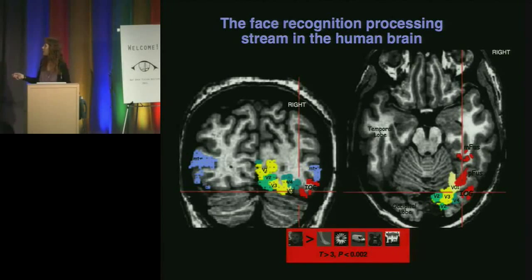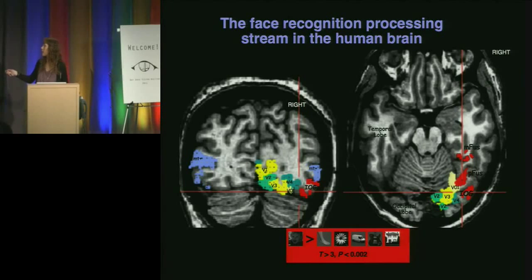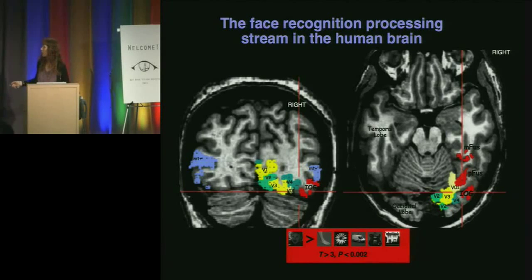We have three face-selective regions in the human brain. One region is here in the inferior occipital gyrus, I call it IOG. Then there are two regions in the fusiform gyrus — one in the posterior fusiform and one more anterior in the mid-fusiform gyrus. What we're trying to figure out is what kind of processing happens across this processing stream that enables face recognition.